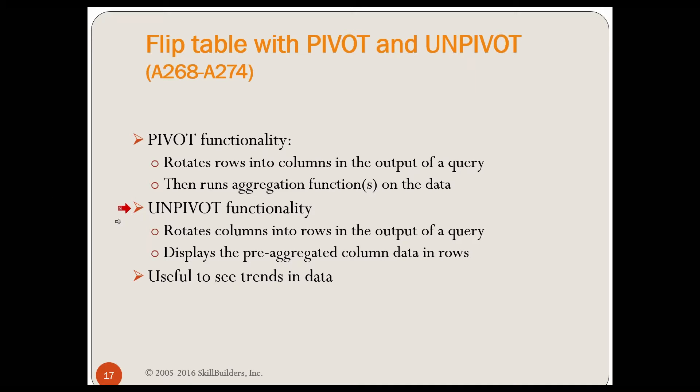The unpivot does the reverse. The unpivot says, I've got columns that I'm going to fold down and make them data in a column going down in rows. And I'm going to display pre-aggregated data, data that I already have aggregated. When I unpivot, it's going to flip columns into row data. All of these things have been useful for a lot of things, in particular, useful for seeing trends in data.